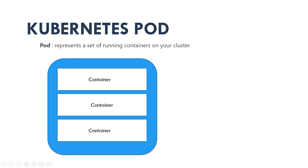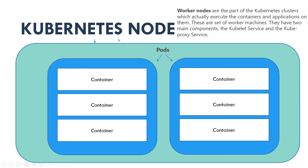Now what is a pod? A pod represents a set of running containers on your cluster. Inside the pod we have multiple containers - these are the running containers inside the pod. This pod goes inside a node. A node could be a physical machine or a virtual machine.